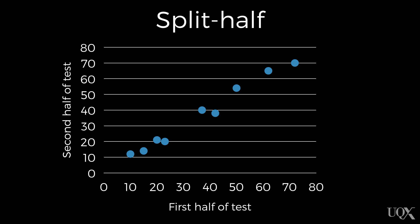We can do the correlation again, and it's about 0.8. From this, we can conclude that this test is reliable. Is this a good way to do it? Do you see any problems with just cutting one test in half as a way to evaluate test reliability?